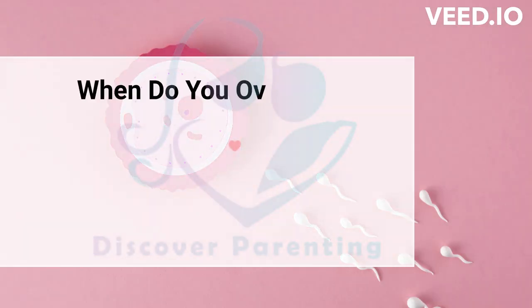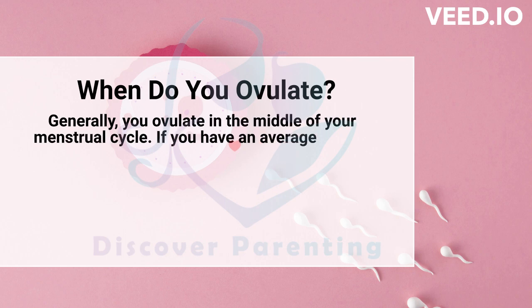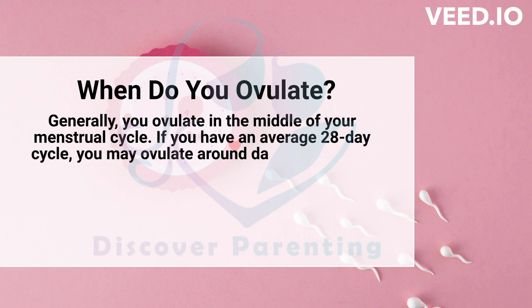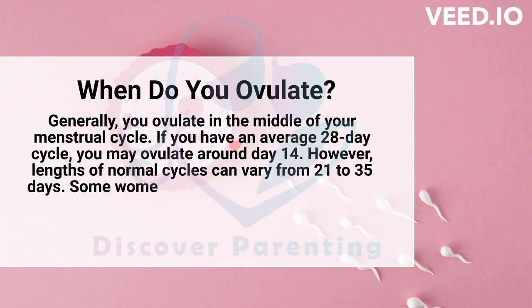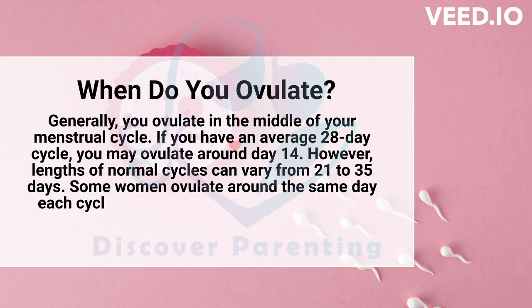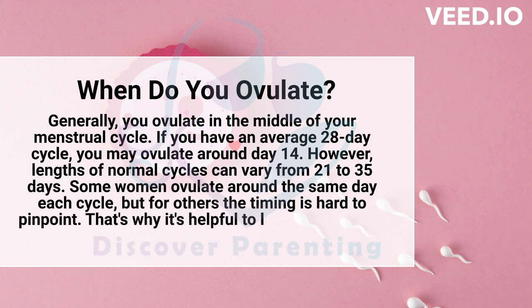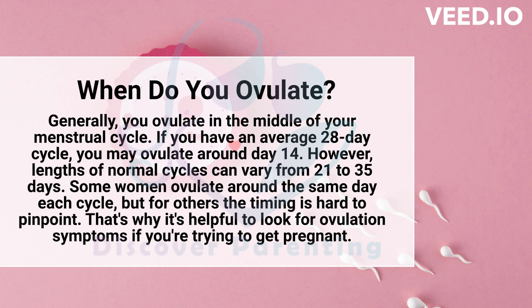When do you ovulate? Generally, you ovulate in the middle of your menstrual cycle. If you have an average 28-day cycle, you may ovulate around day 14. However, lengths of normal cycles can vary from 21 to 35 days. Some women ovulate around the same day each cycle, but for others the timing is hard to pinpoint.